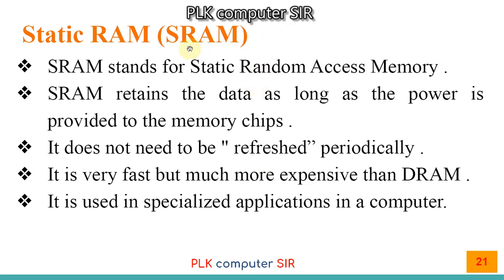There are two types of RAM: SRAM and DRAM. SRAM stands for Static Random Access Memory. SRAM retains the data as long as power is provided to the computer chips. It does not need to be refreshed periodically like DRAM. It is very fast but much more expensive than DRAM. It is used in specialized applications — meaning for special purposes only. SRAM is not used in our home computers; DRAM is used in household computers.